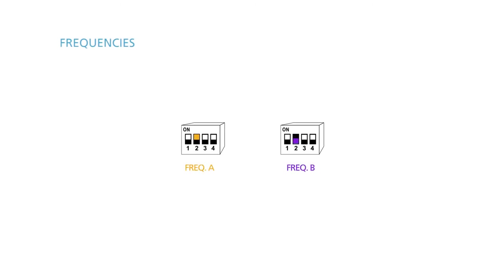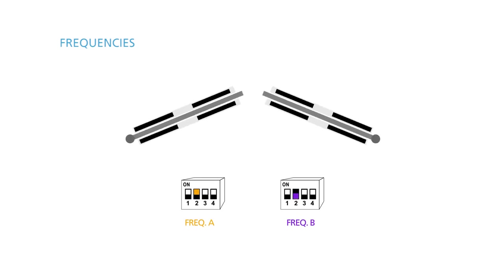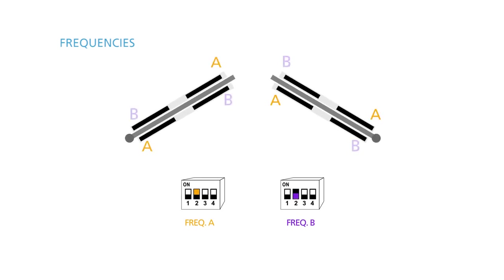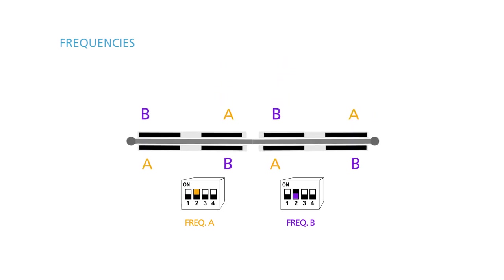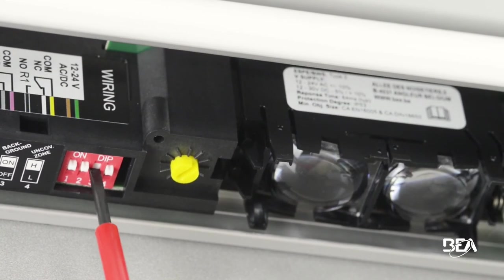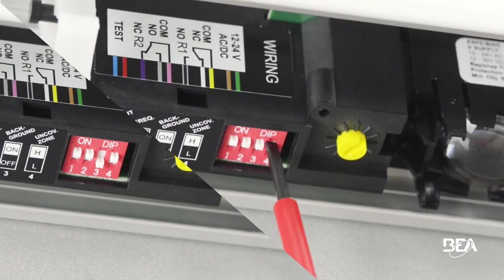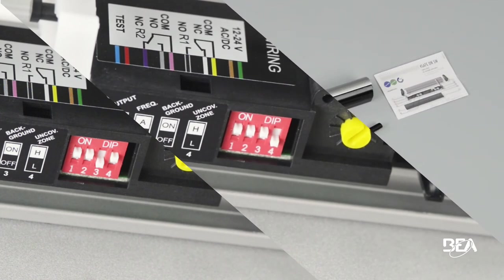Make sure to alternate the frequencies of the modules next to each other by alternating the position of the second dip switch. For particular environments, dip switches 3 and 4 can be used. In this case, please refer to the user's guide.